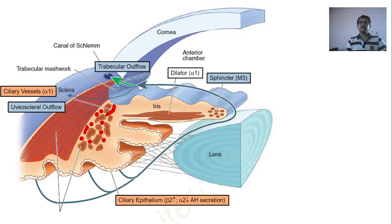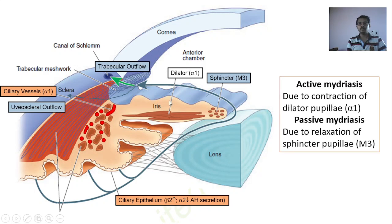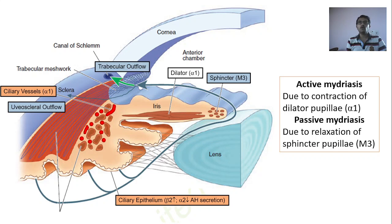So both of these are two ways in which you can produce mydriasis, and these are the exact names for the two types: active mydriasis and passive mydriasis. Active mydriasis is achieved by activating the alpha-1 receptors on the dilator pupillae. Passive mydriasis is achieved by inhibiting or relaxing the sphincter pupillae. Whether it is active or passive mydriasis, the pupils will undergo dilatation.